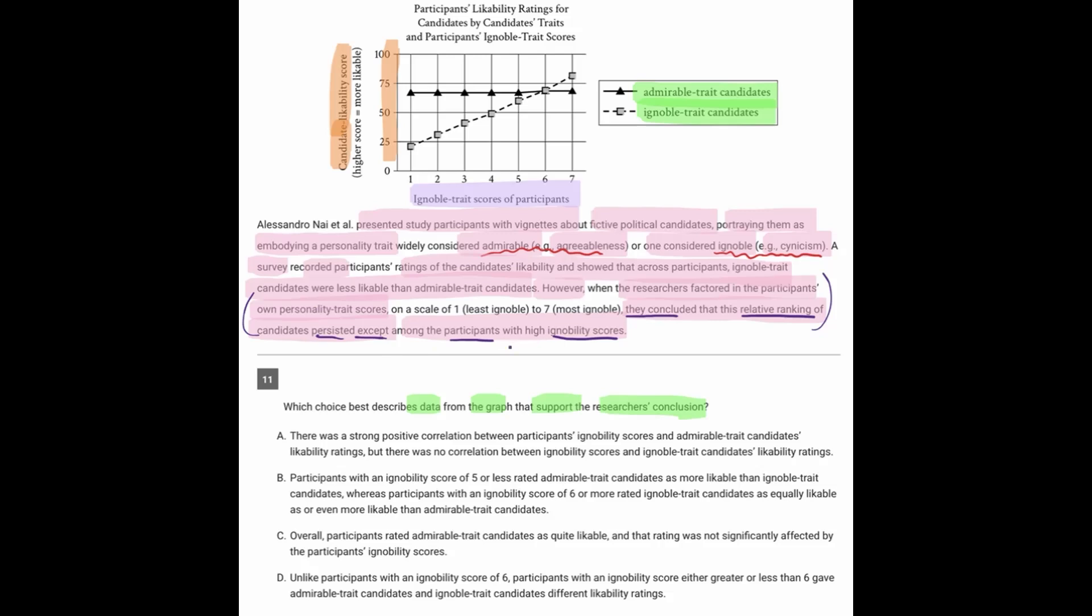And the key right here says we're talking about the admirable candidates and the ignoble candidates. So the main part of the conclusion was that when the participants had the high ignoability scores, which basically puts them around this part of the chart, the relative ranking did not persist anymore. And that relative ranking that was mentioned was the idea that the ignoble trait candidates were less likable. So all throughout this graph,